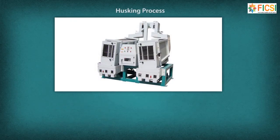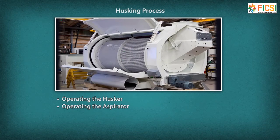Husking Process: The grain mill operator performs the following tasks at the husking stage: operating the husker to remove husk from the grain by adjusting the rollers, and operating the aspirator by controlling the speed of the aspirator fan to separate de-husked grains and remove husk.